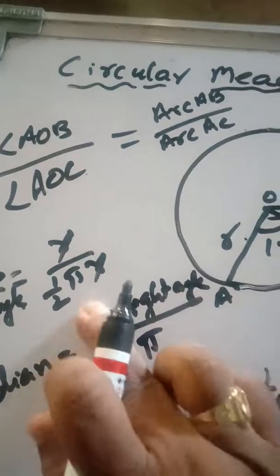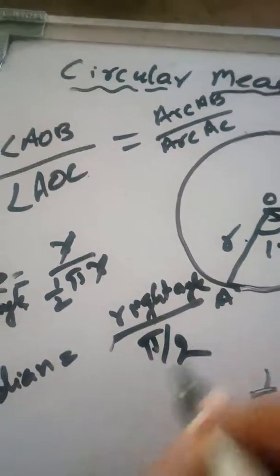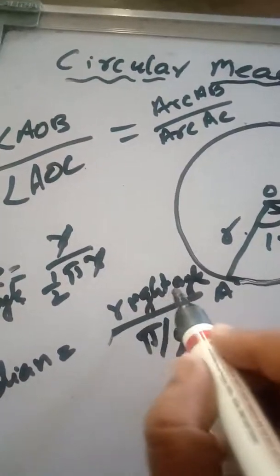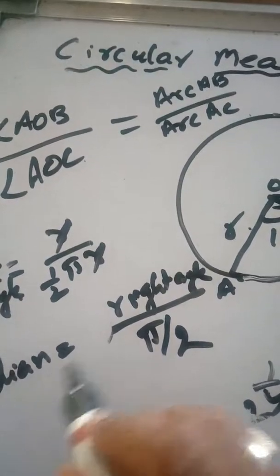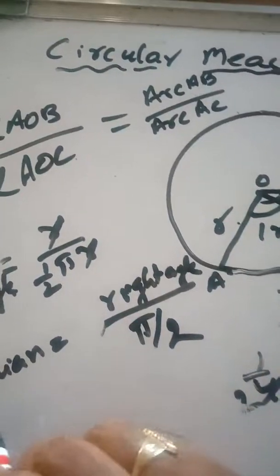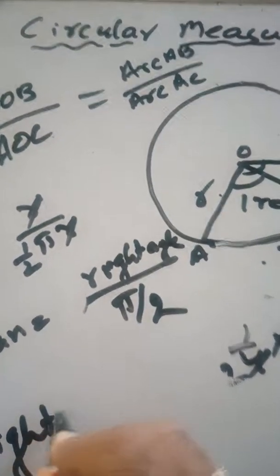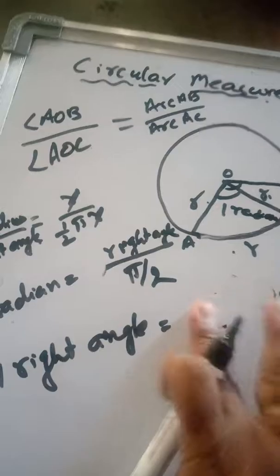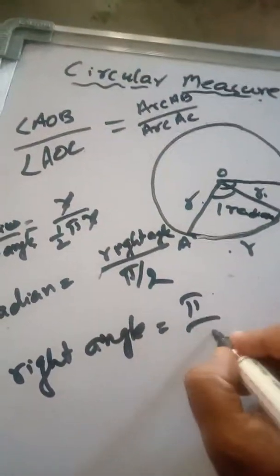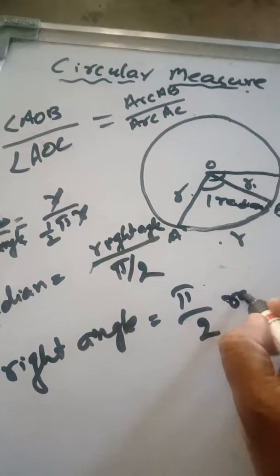Or simply I'll write π/2. That means 1 right angle divided by π/2 equals 1 radian. Therefore, one right angle equals π/2 radians.